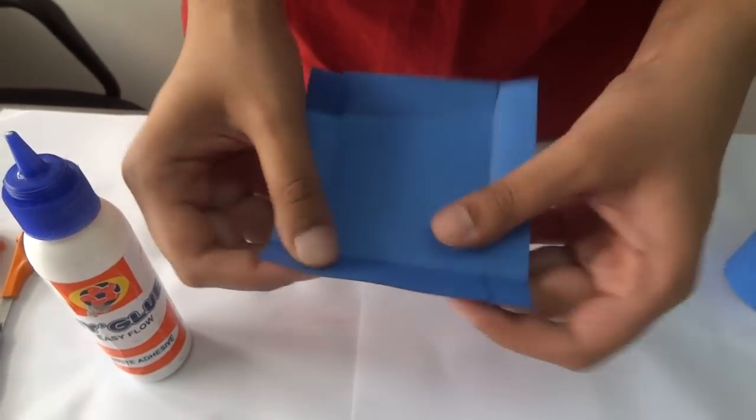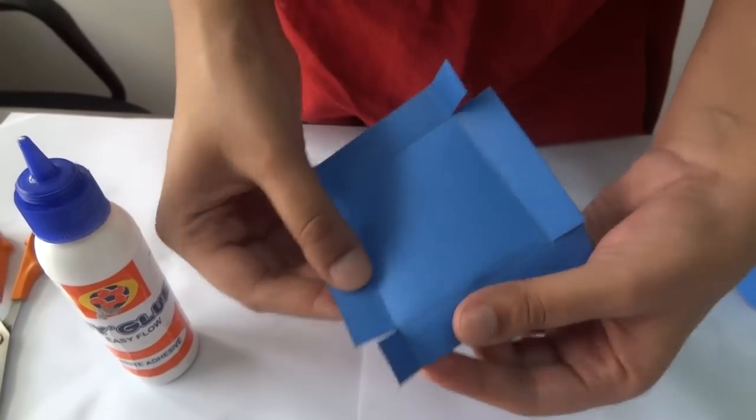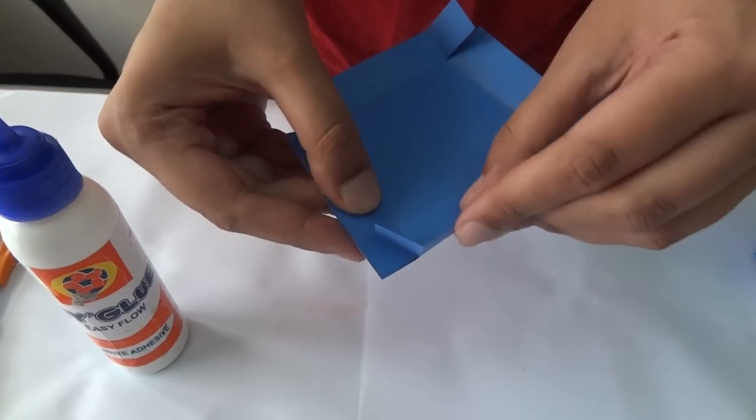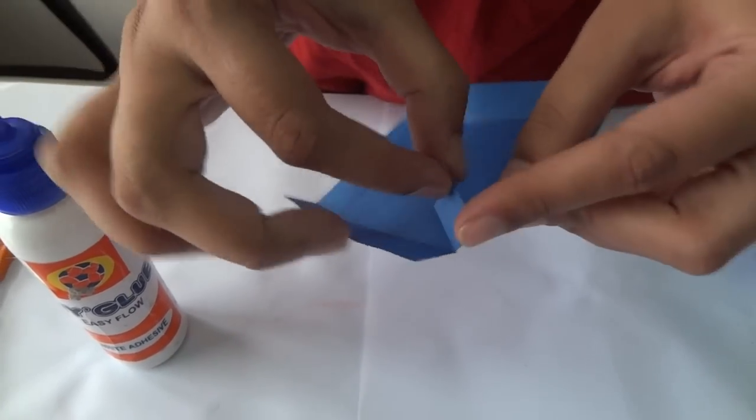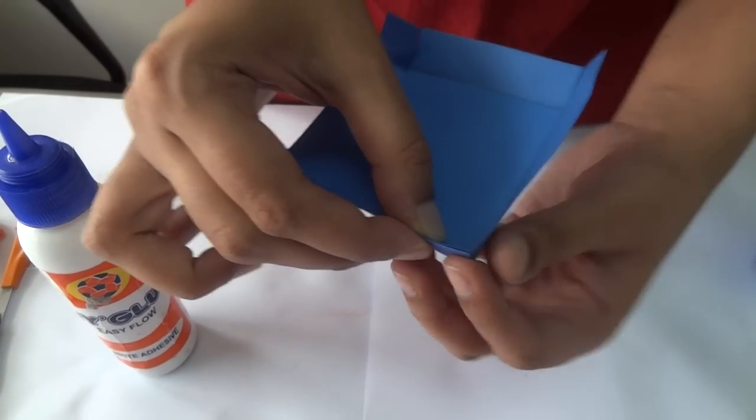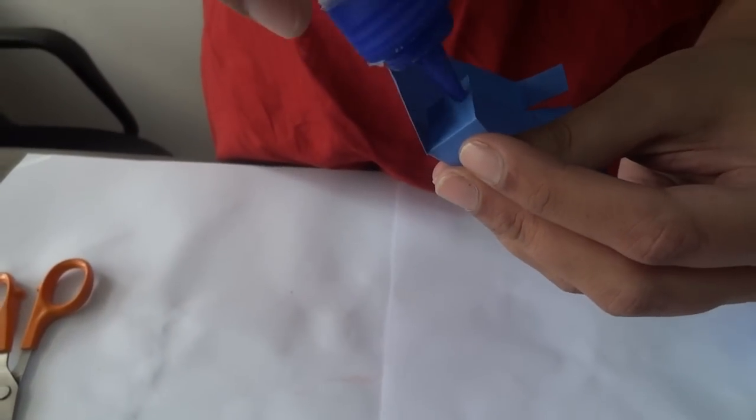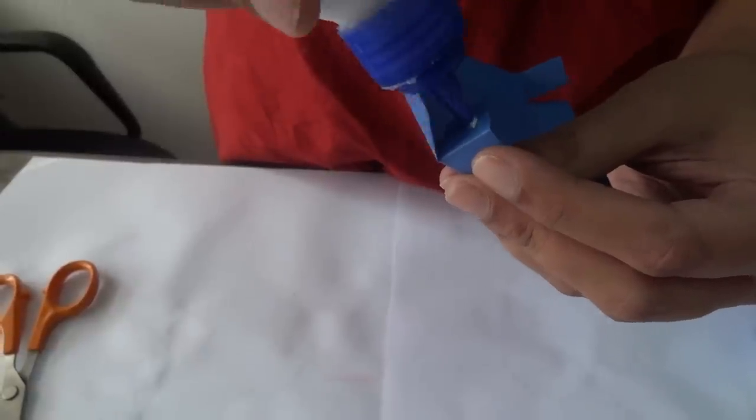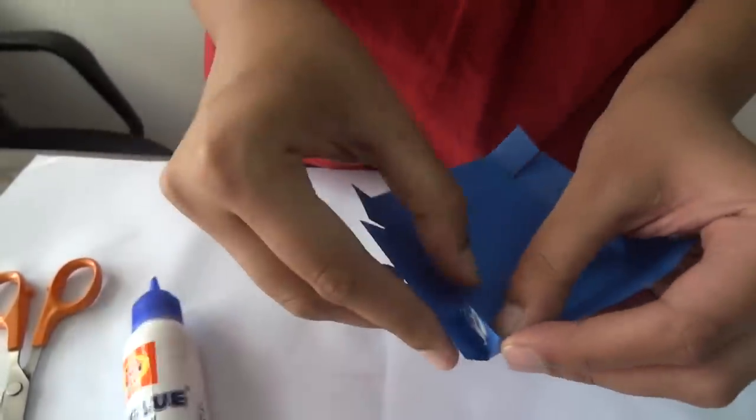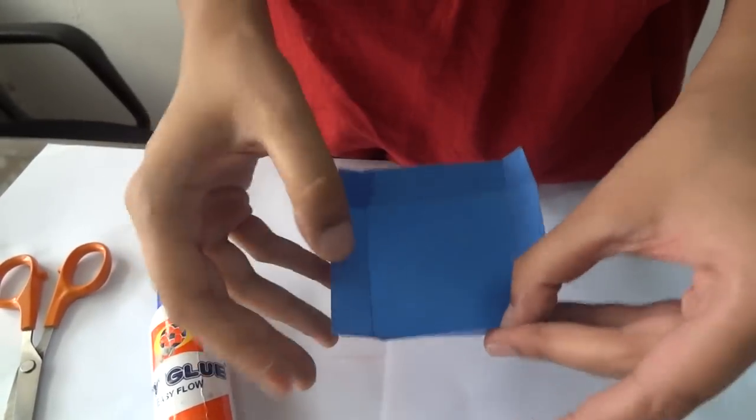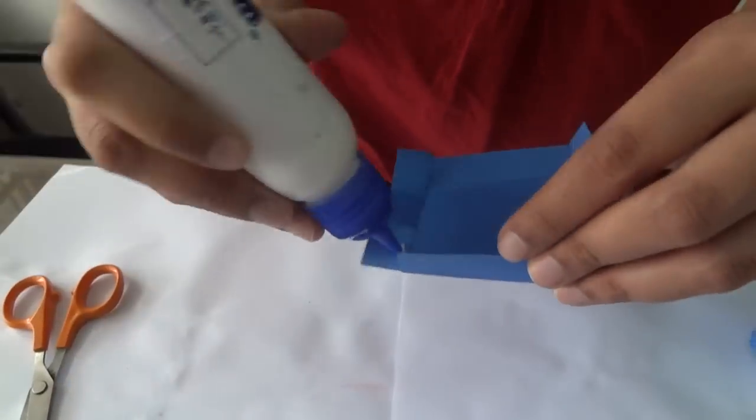Once you have folded, now see how the base will have to go. See one corner, folding both sides and this square has to be pasted here. Like this, so that you will get a box. See let's paste it. Use Fevicol like this. Paste it.